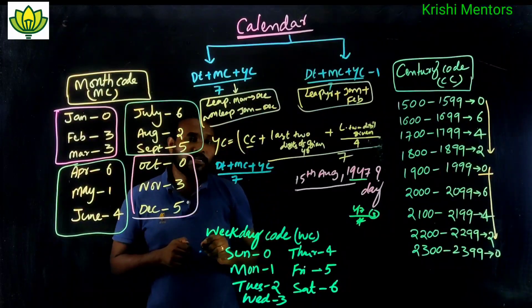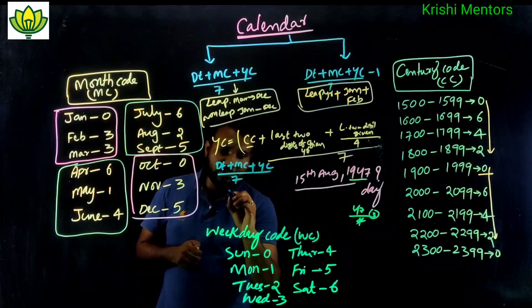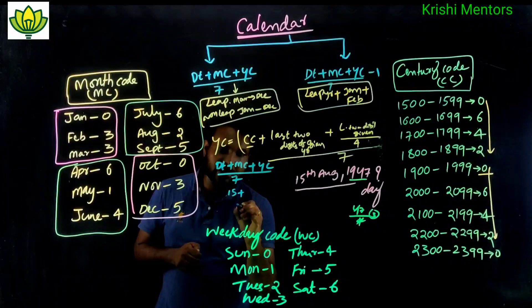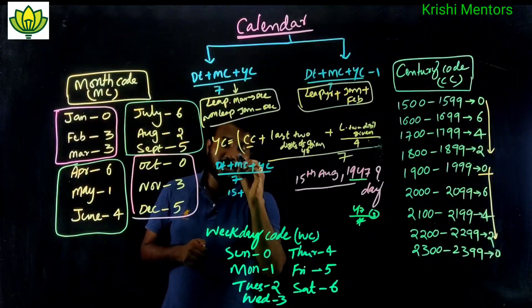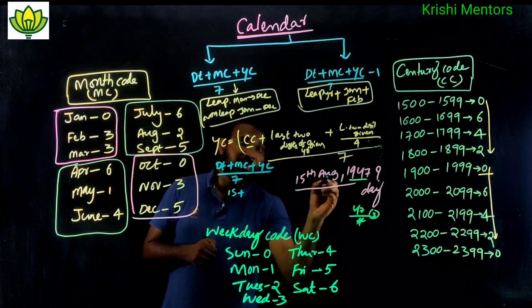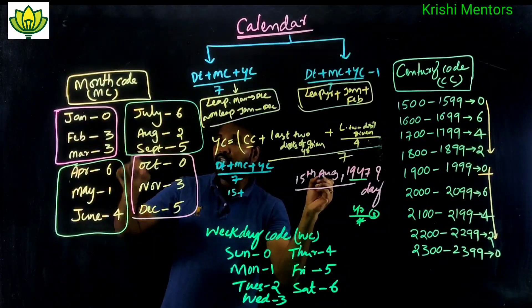The date is August 15th, so date = 15. The month code for August is 2.